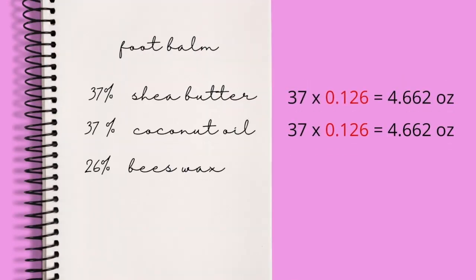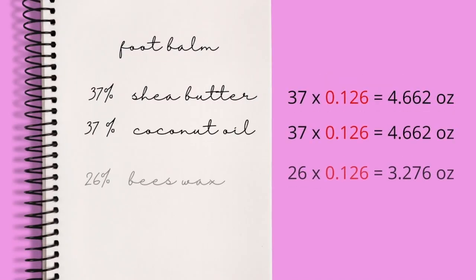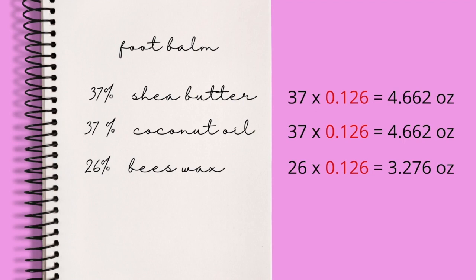The next ingredient is coconut oil, also with 37%. We multiply by 0.126 ounces and we get 4.662 ounces. And finally, the third ingredient is beeswax at 26%, so 26 times 0.126 equals 3.276 ounces. All ingredients summed up are 12.6 ounces, which was our 100%.